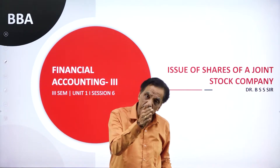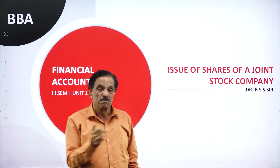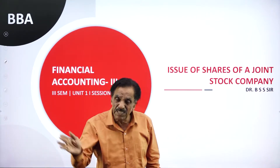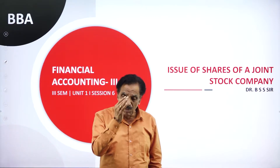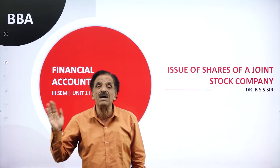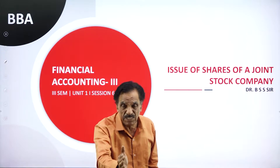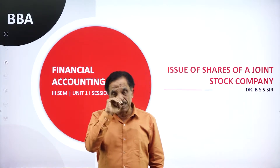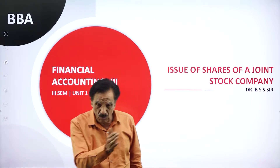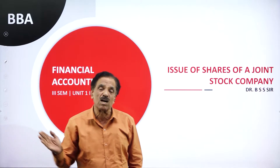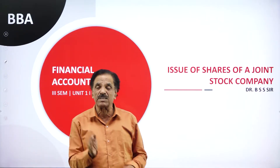The entries are: share application account debit to share capital account — adjusted to allotment, refunded excess application. The common entry is bank account debit to share application account. Second entry: share application account debit to share capital account, through bank account, through share allotment account.